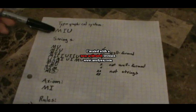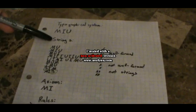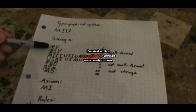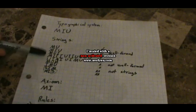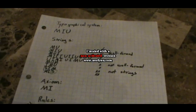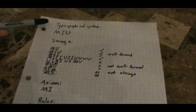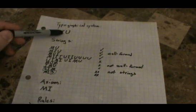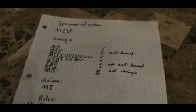The name of that system is the MIU system. Systems are made out of what are called strings. Here we've got a few strings of characters. Some of them are strings in the MIU system, and some of them are not. The only definition limiting what is a string of the MIU system is that it contains nothing but the characters M, I, and U. SIM is not, MI3 is not, because they contain other characters.